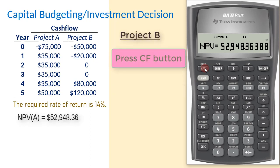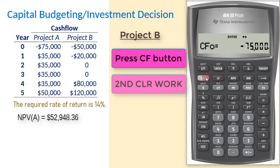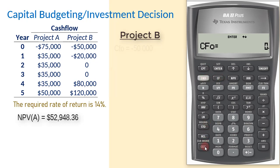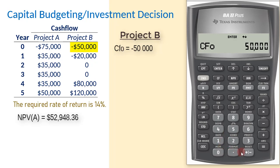For Project B, we start again by pressing the CF button and then 2nd Clear Work to clear previously done work. CF0 will be negative $50,000, enter, scroll down.